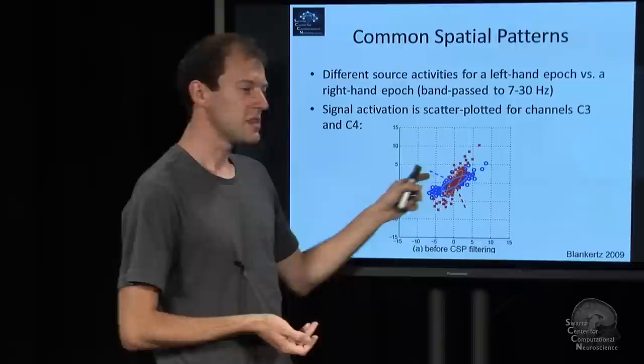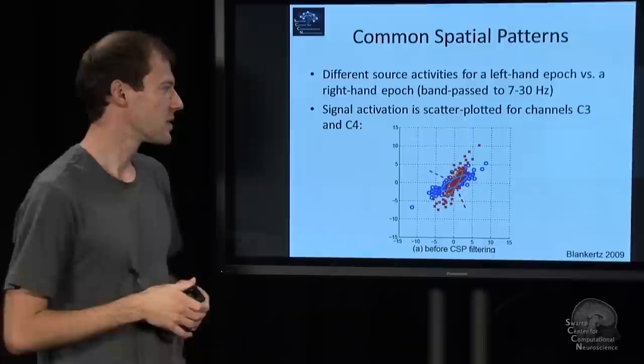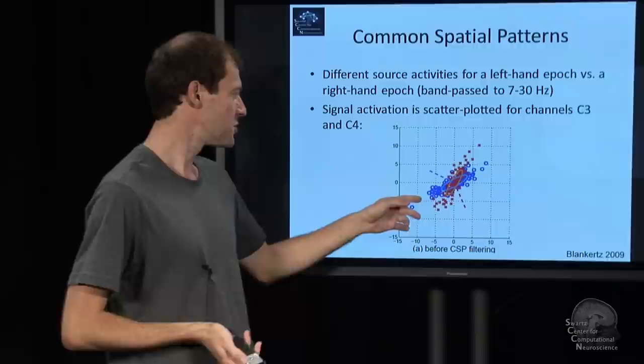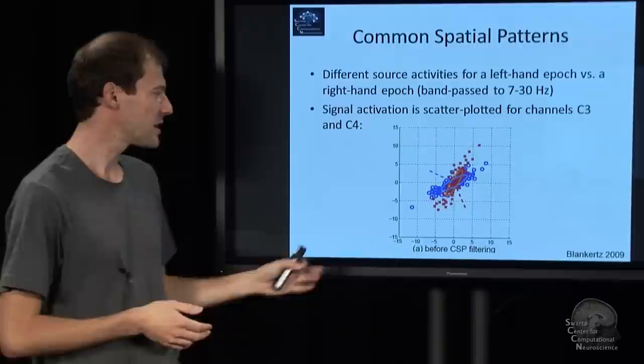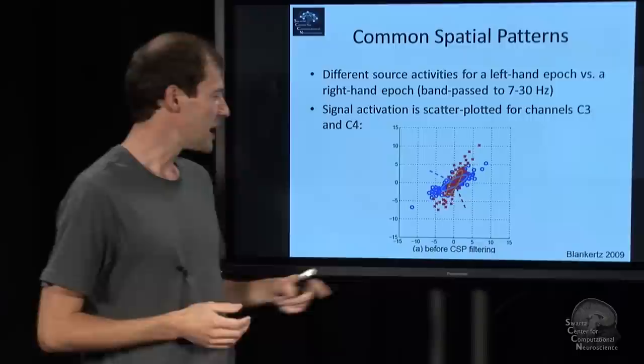And also, the two channels are pretty much correlated. So it projects both this and that channel. And from looking at the variances here, you can't really tell whether it's one class or the other. There's a little bit of information, but it's really not ideal. So the task now is to do a linear transform of this so that you can directly measure the variance and get a lot of information about whether it's condition one or condition two.